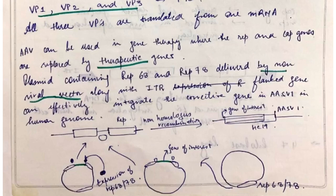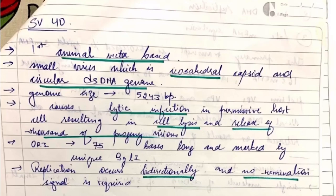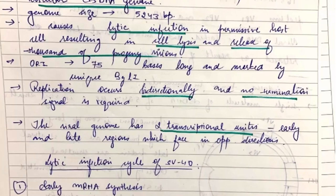The next virus is SV40 virus. This is the first animal-based vector. This virus is icosahedral capsid and has circular double-stranded DNA genome. It causes basically lytic infection which results in cell lysis and release of thousands of progeny virions.